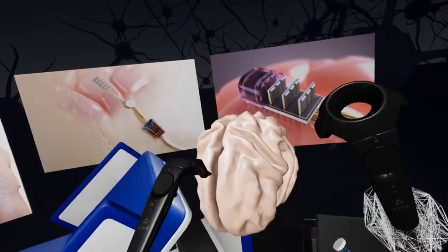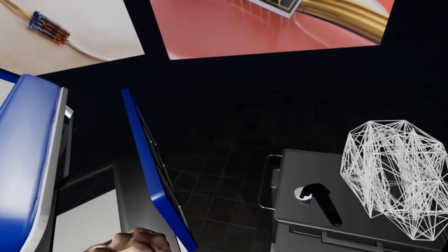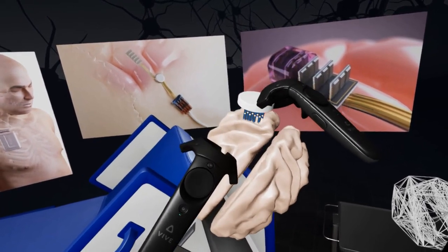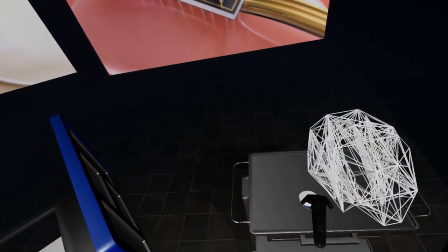The implant will be connected to a control unit in the chest. In order to prevent the development of epileptic seizures, the Candu device will monitor the electrical activity of the brain.